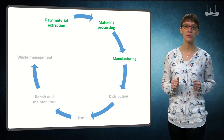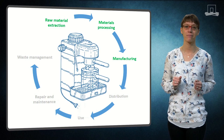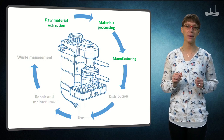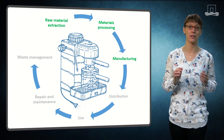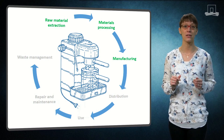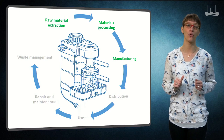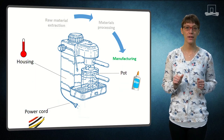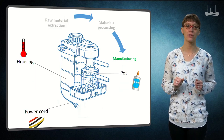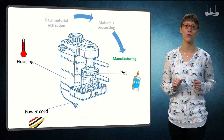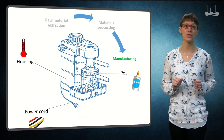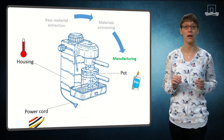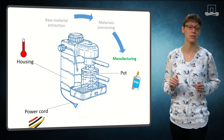Let's take a closer look at these stages for the example of a coffee maker. A coffee maker contains various elements, such as the glass pot with the lid, the housing with buttons, and the electrical cord. The manufacturing stage describes how the different parts of the product are assembled. This stage may require additional inputs, such as glue, lining, electricity, or heat.